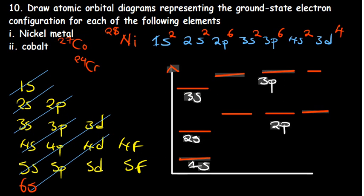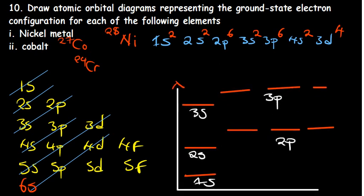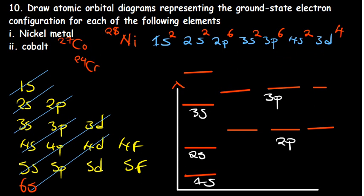Let me redraw to make it bigger. After 3p we add a new line for 4s, and then from 4s to 3d. The 3d subshell has 5 orbitals. Importantly, 3d is drawn slightly lower than 4p but slightly higher than 4s in energy. So we draw 5 lines for 3d: 1, 2, 3, 4, 5.